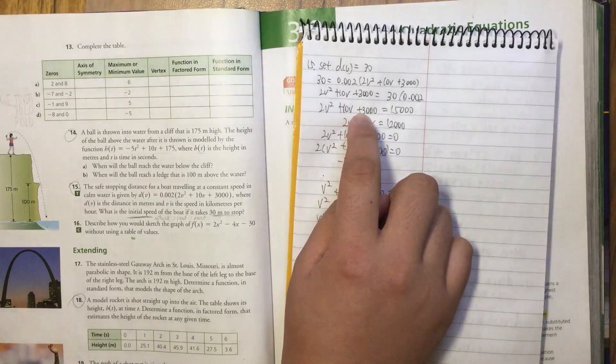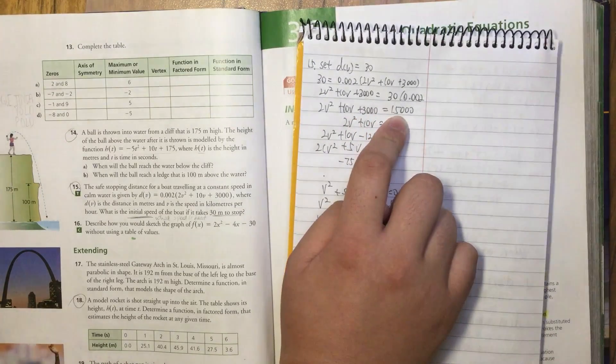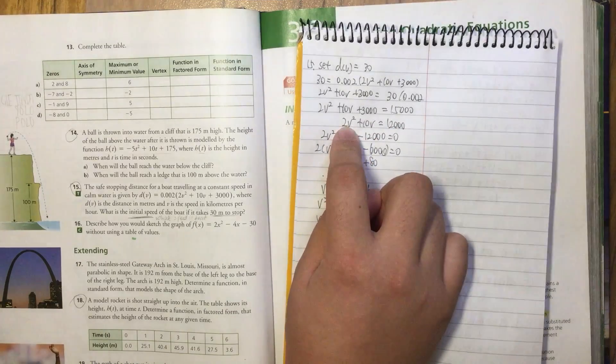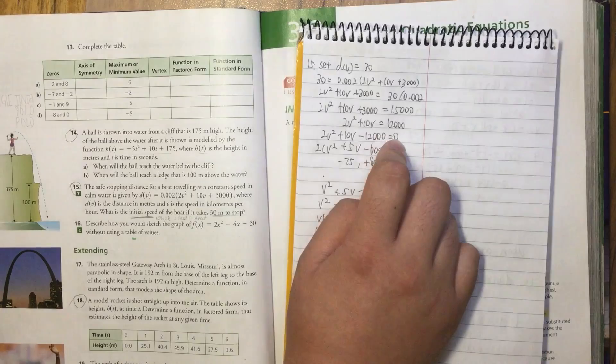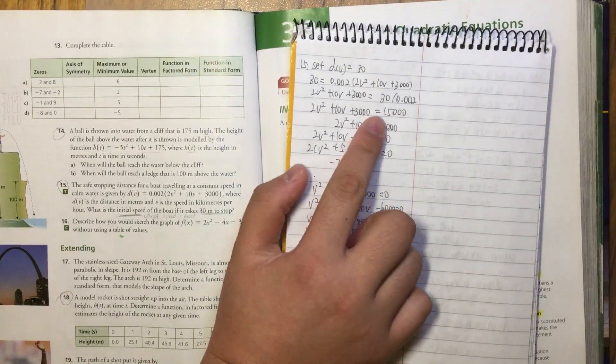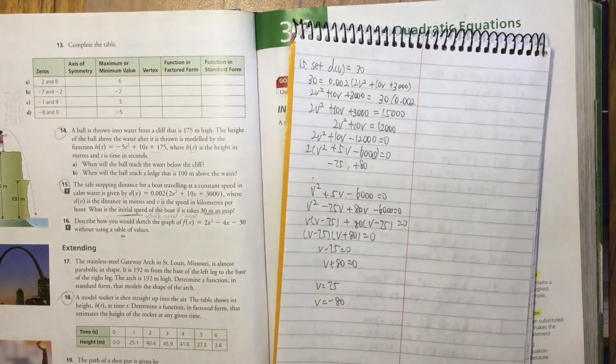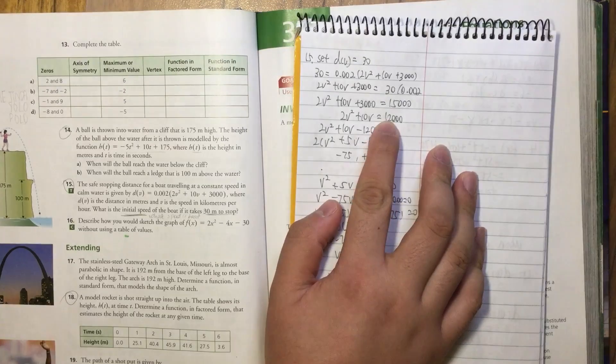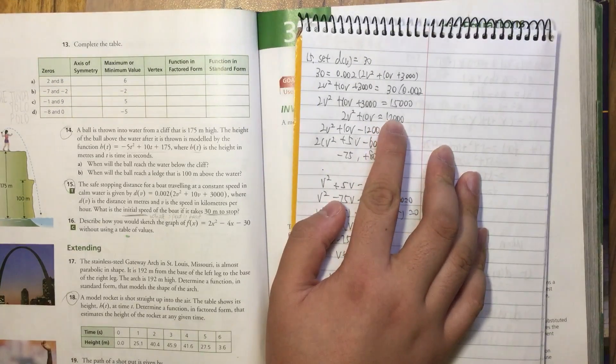After that, 2V² + 10V = 12,000 because I used the 15,000 to minus 3,000. Then I transfer the positive 12,000 to the other side of the equal sign, so this side will be 0.